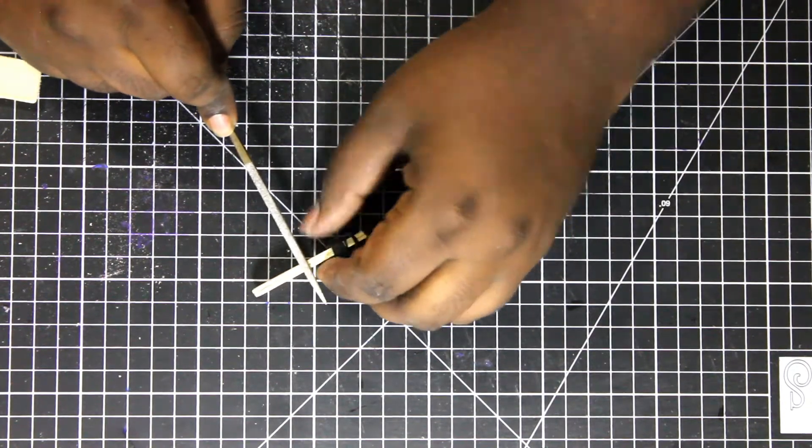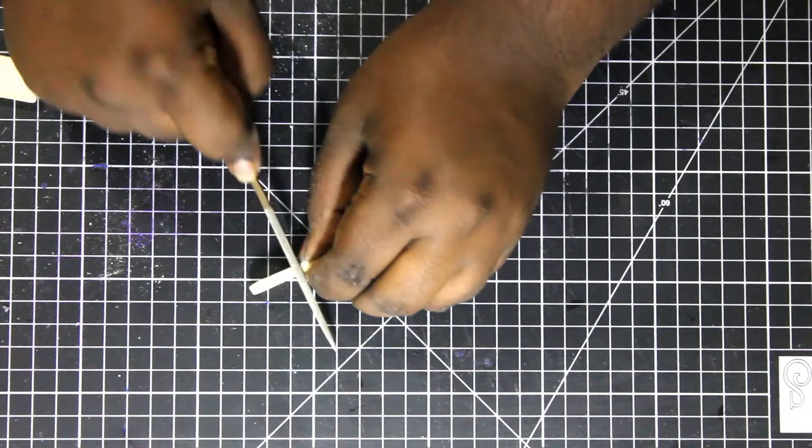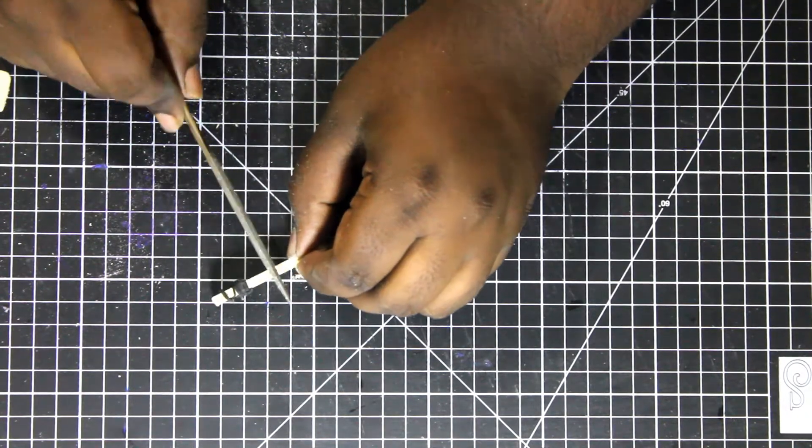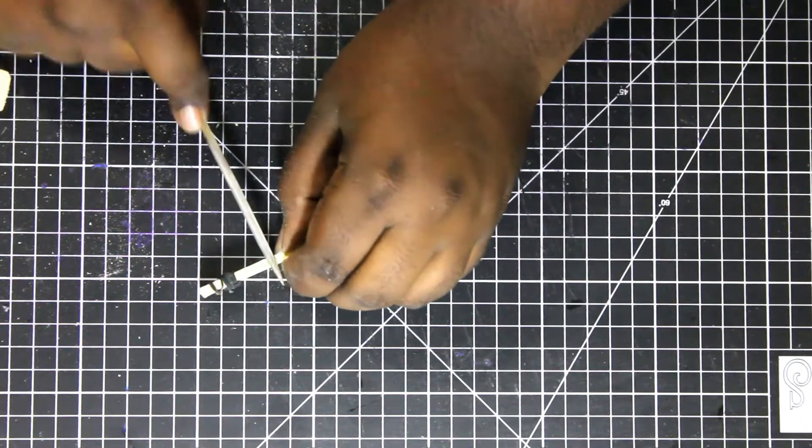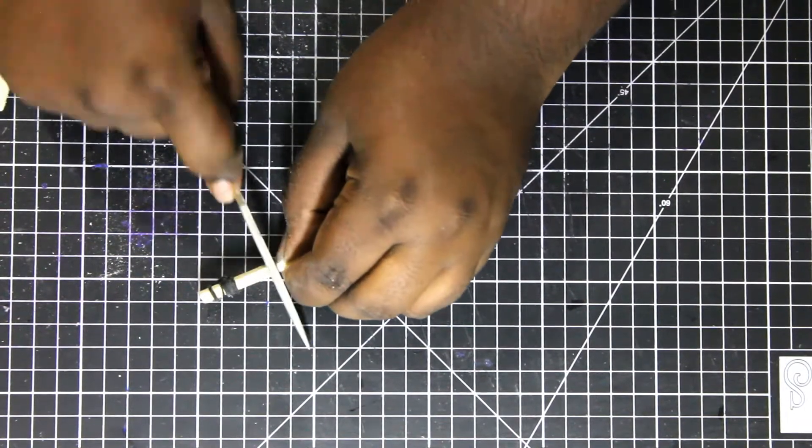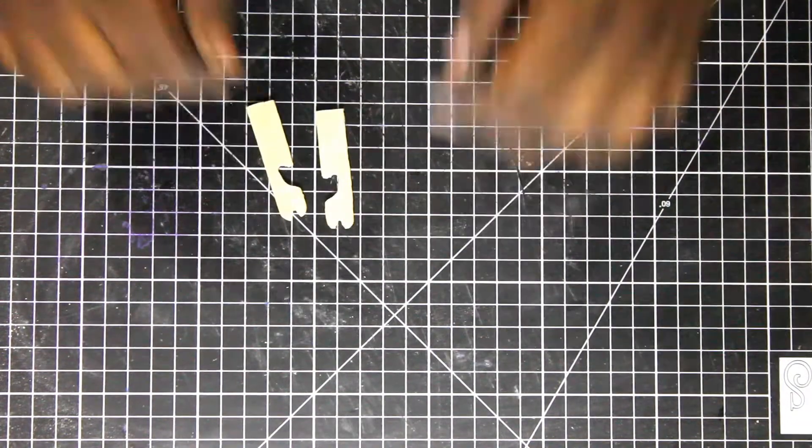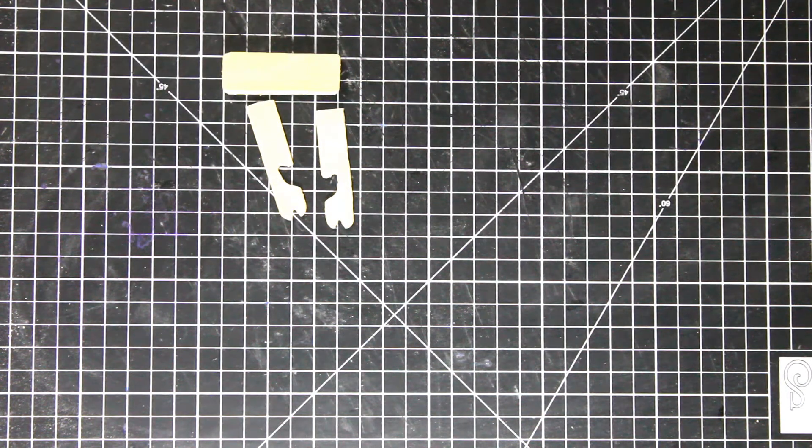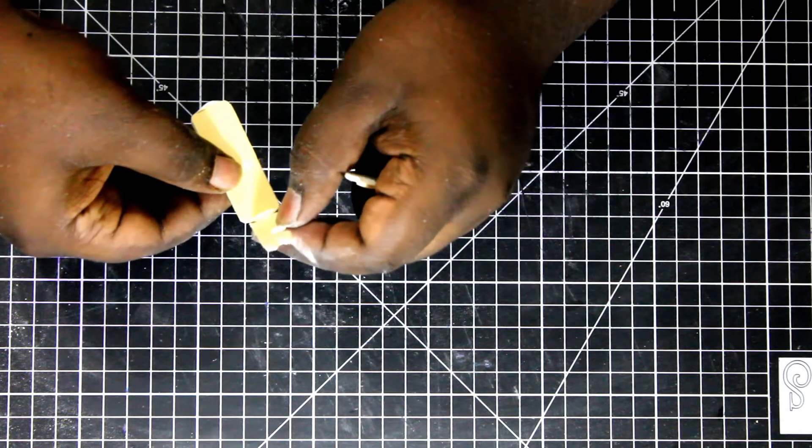Use a diamond file to carve the slots for the handle and the sword. Now use craft glue and stick it together.